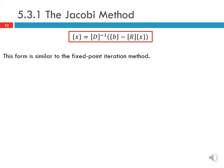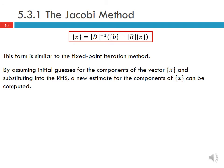This form is similar to the fixed point iteration method. We assume an initial guess for the components of the vector x and substitute those into the right-hand side. From that, a new estimate for the components of x can be computed.